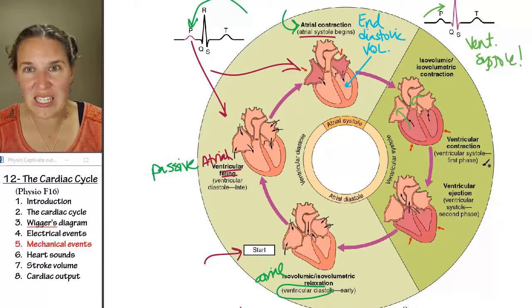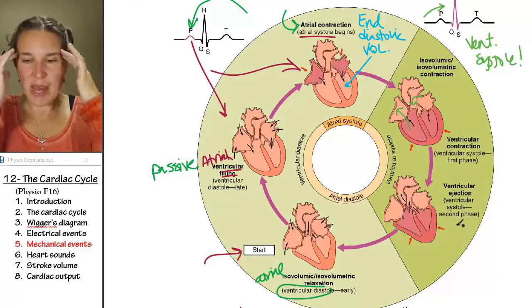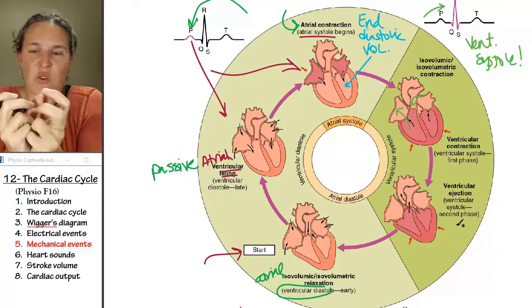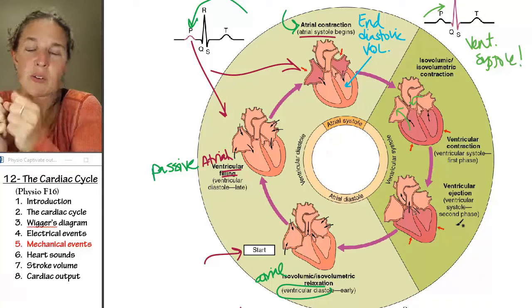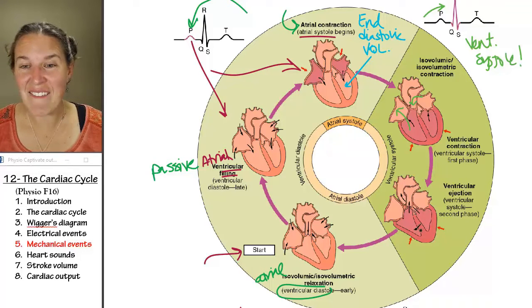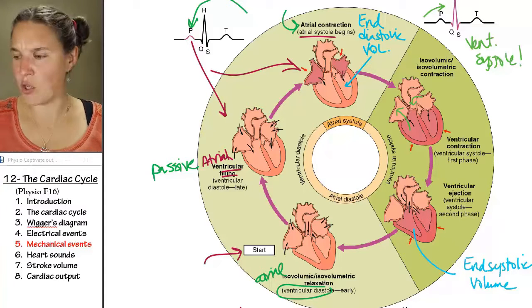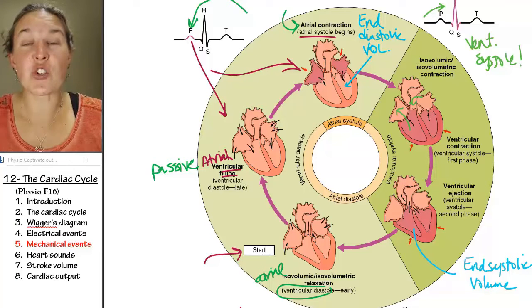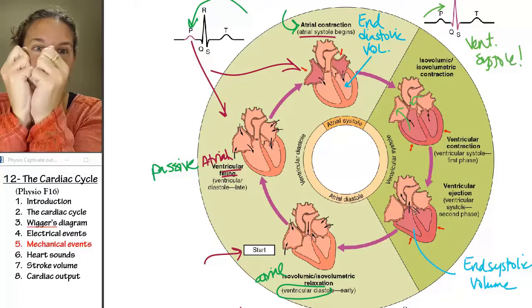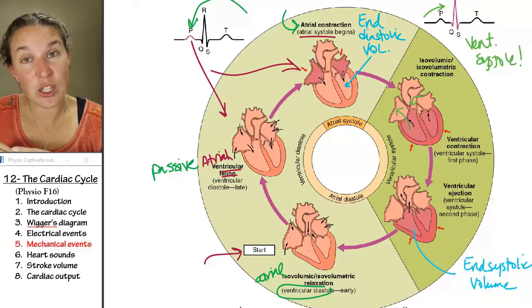As ventricular systole sort of finishes, you're going to end up, can you imagine, do you agree, that your ventricles are going to squeeze out all the blood that they can possibly squeeze out. And what you end up with at that point is a volume known as end systolic volume. Do you agree that the end systolic volume is at the end of ventricular systole we squeeze out all the blood that's possible and the volume in the ventricles is really low?